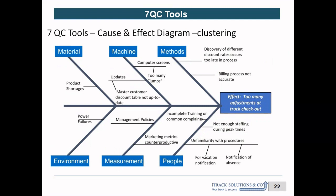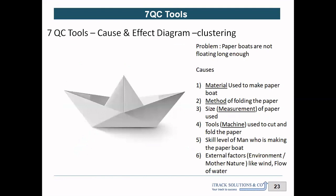As mentioned, the head of the fish represents the problem we are trying to solve. The main bones — shown as dark blue lines — represent the categories: Method, Machine, Material, Environment (also called Mother Nature), Measurement, and People. Underneath each of these main bones we club the root causes that fall under that category.